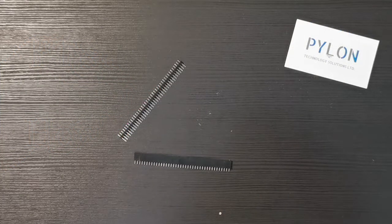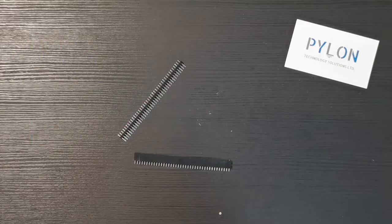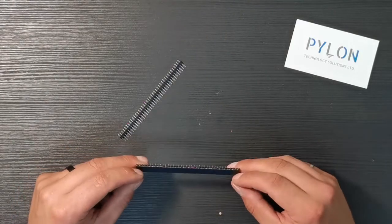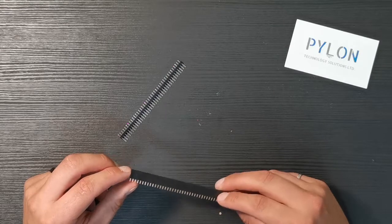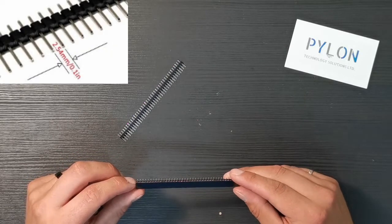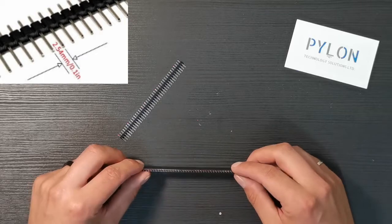Hi everybody. Today we're going to be talking about male and female headers such as the ones here. These are both single row 40 pin male headers with a spacing or pitch of 2.54 millimeters or 0.1 inches.